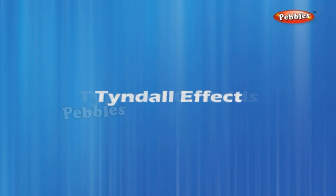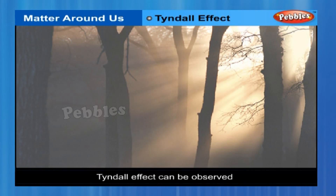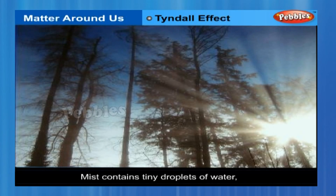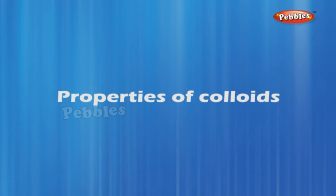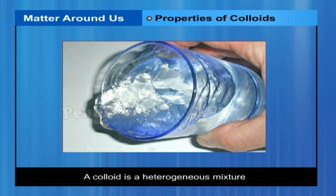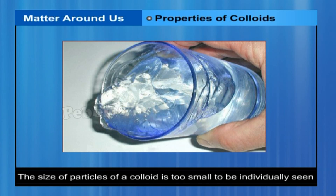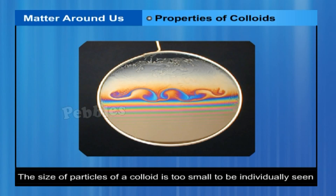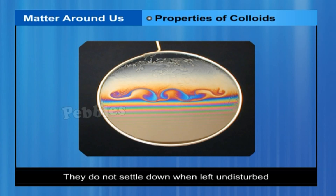Types of colloids are shown in the table. The Tyndall effect can be observed when sunlight passes through the canopy of a dense forest. In the forest, mist contains tiny droplets of water, which act as particles of colloid dispersed in air. A colloid is a heterogeneous mixture. The size of particles of a colloid is too small to be individually seen by the naked eye, but colloids are big enough to scatter a beam of light and make its path visible. They do not settle down when left undisturbed — that is, a colloid is quite stable.